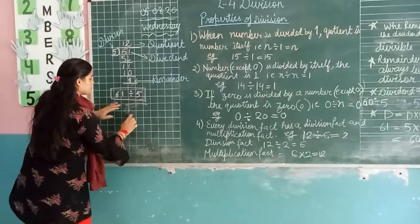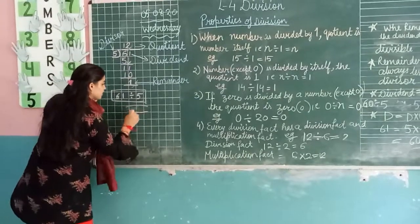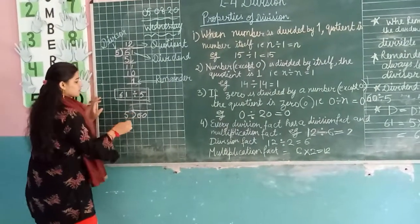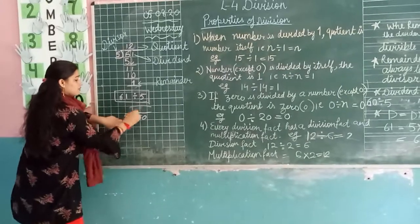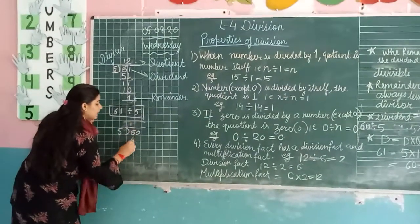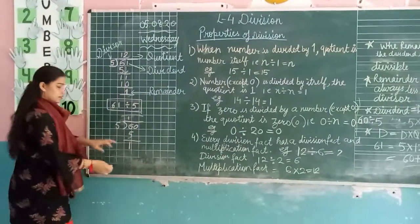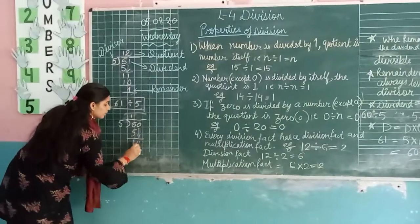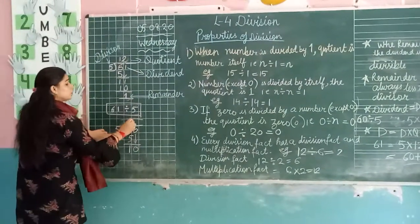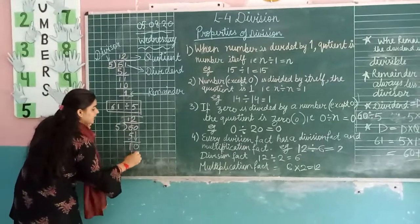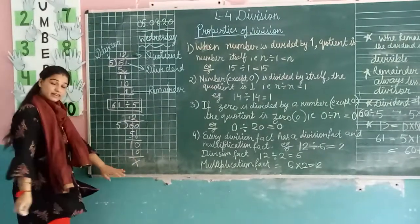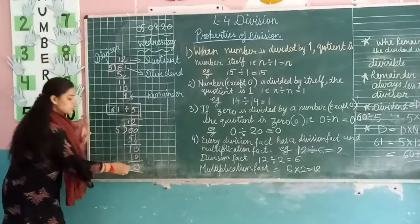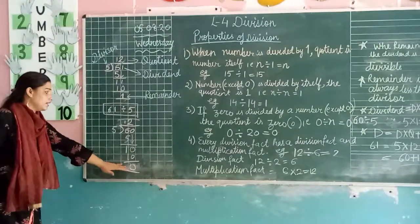Here we have 60. We will divide 60 by 5. 5 comes up — 5, 5, 5. Now we will get 0. 5 twos are 10. There is no remainder. The remainder is 0. So sometimes we get 0 as remainder.